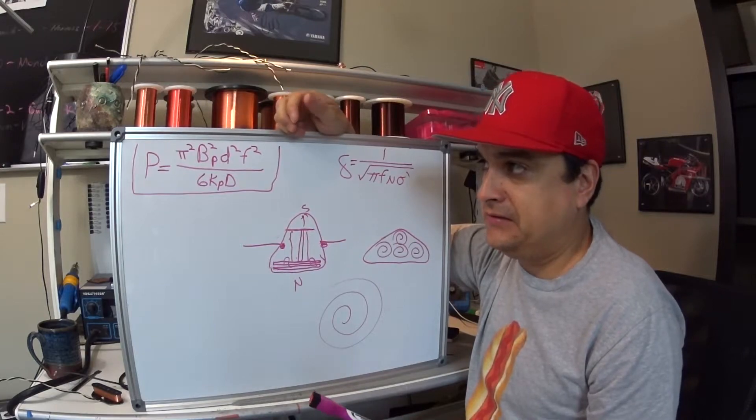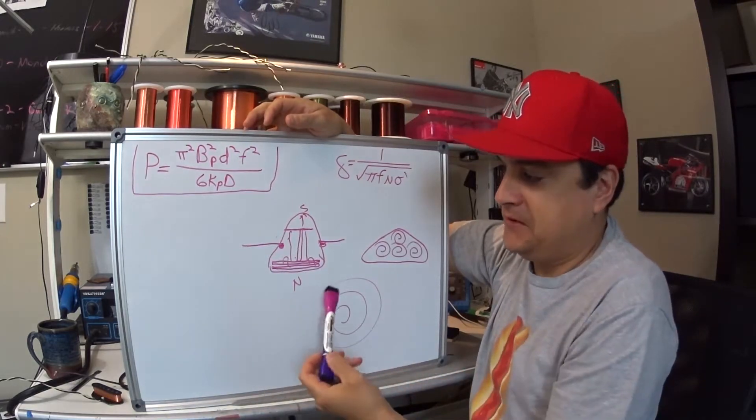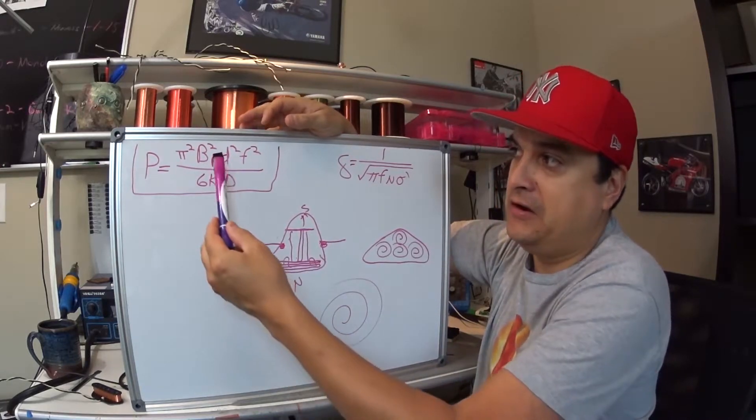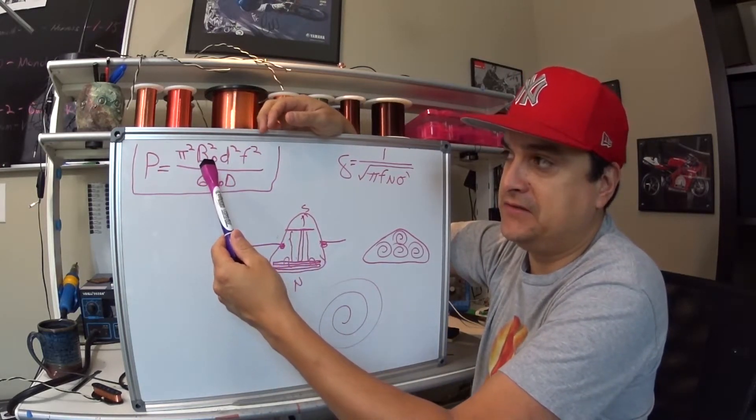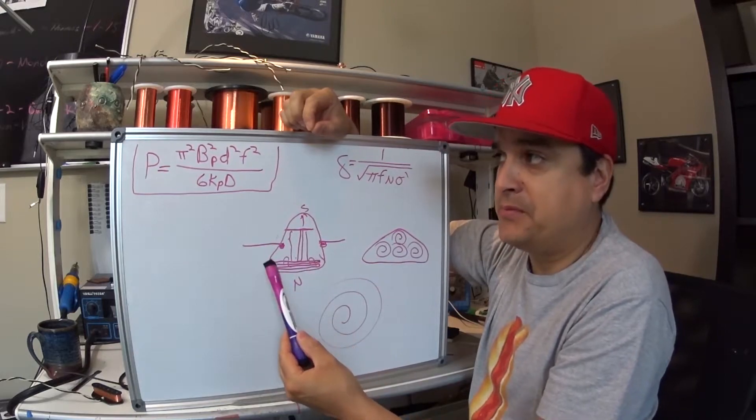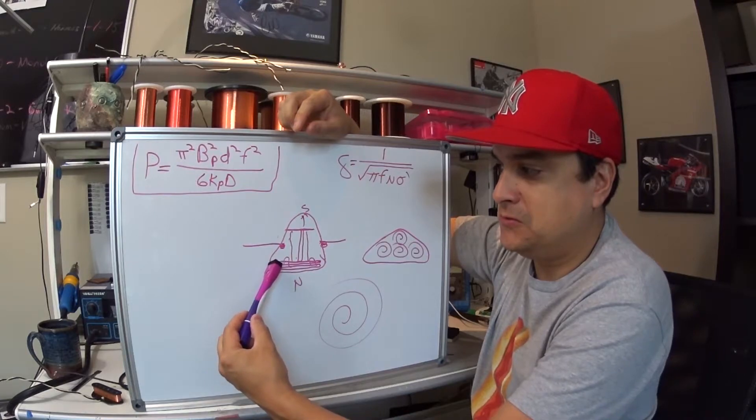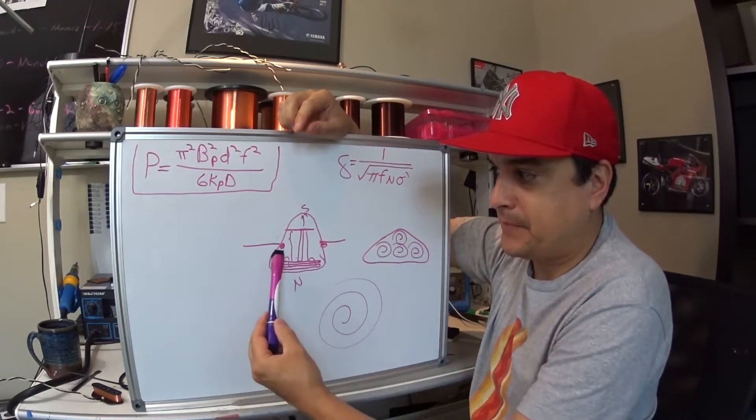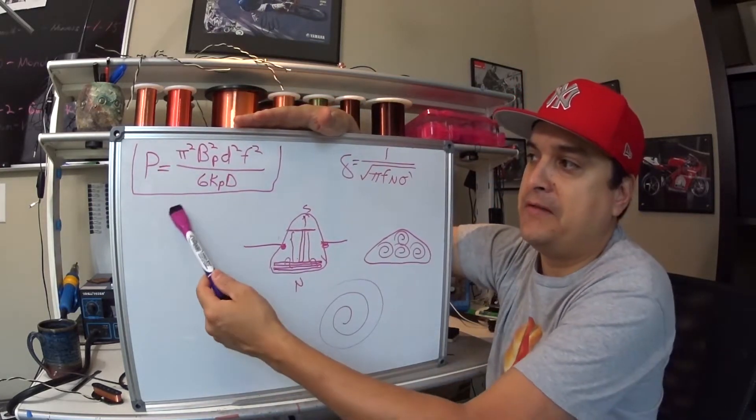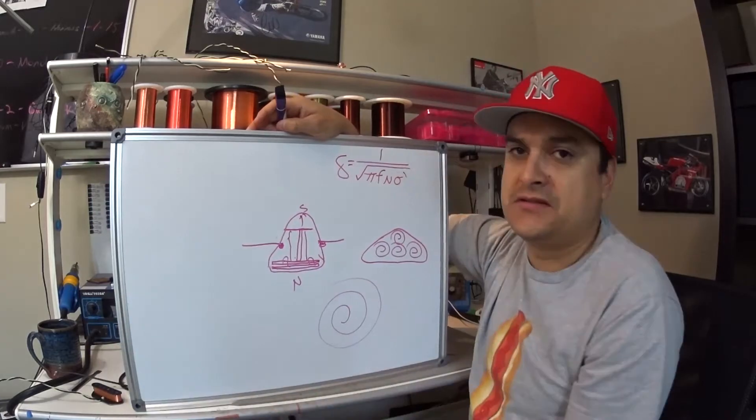So I'm going to explain to you briefly this formula. P means power. So basically, this is the power that is lost by the particular eddy current. And all these letters up here represent a few different things. They represent the strength of the magnetic field, the diameter of the wire, the thickness of the metal down here, the distance of the metal between here and here. And all those things factor in.